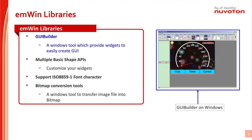emWin also provides multiple basic-shape APIs. If you don't like the existing graphic widgets, you could use these APIs to customize your own widgets. Besides these tools, emWin supports ISO 8859-1 font characters and contains a bitmap conversion tool to transfer different image file formats into bitmap format.